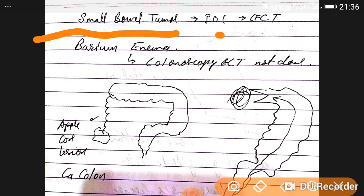Small bowel tumor. Investigation of choice is CECT, which is contrast CT scan. If we do barium enema, we can do colonoscopy, or sometimes it's not done.